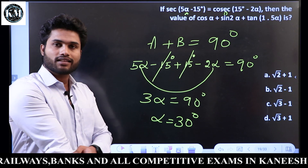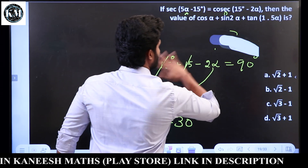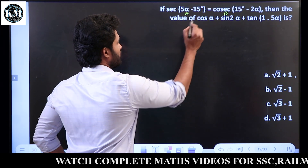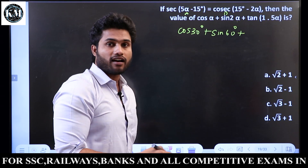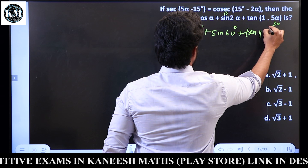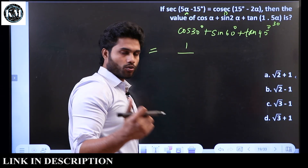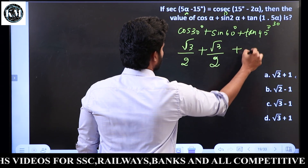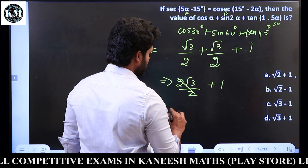Alpha is equal to 30 degrees, so now we substitute. We need cos alpha plus sin 2 alpha. Alpha equals 30, so cos 30 plus sin 60. That gives root 3 by 2 plus root 3 by 2, which is 2 root 3 by 2. The 2 cancels and we get root 3 plus 1 as our final answer. Easy!